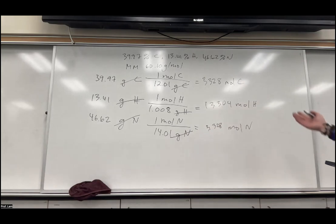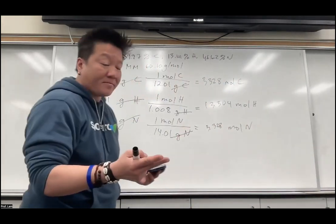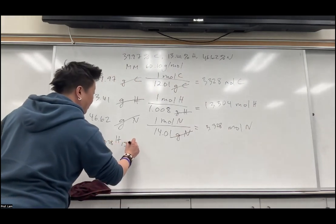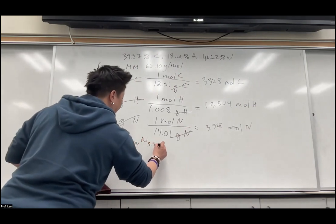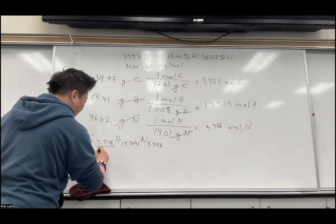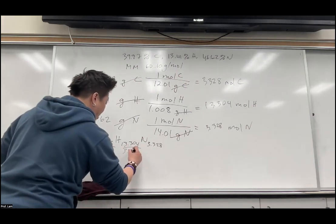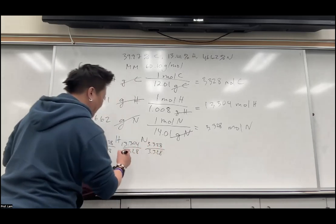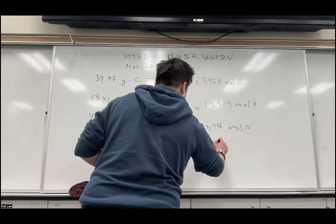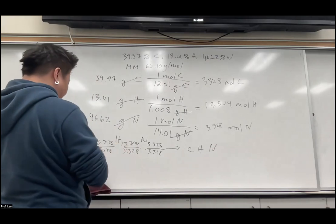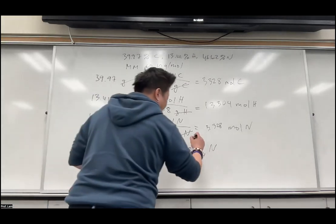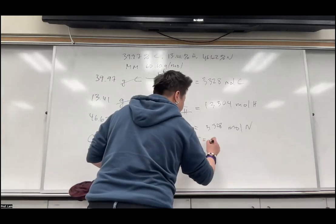Now write the pseudo-formula: C 3.328, H 13.304, N 3.328. Next step: divide by the smallest subscript, which is 3.328. That gives C 1, H 4 (since 13.304 divided by 3.328 is 4), and N 1. So our empirical formula is CH4N.